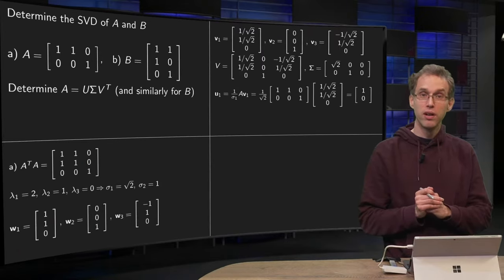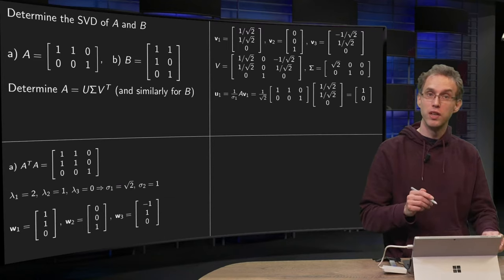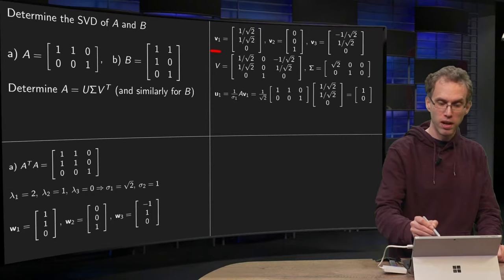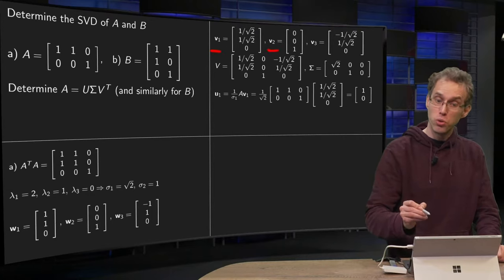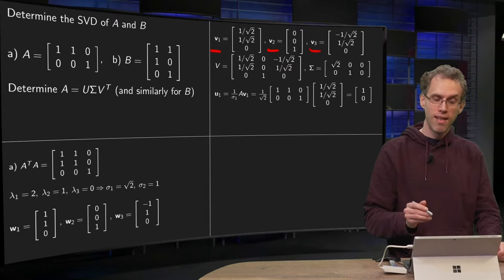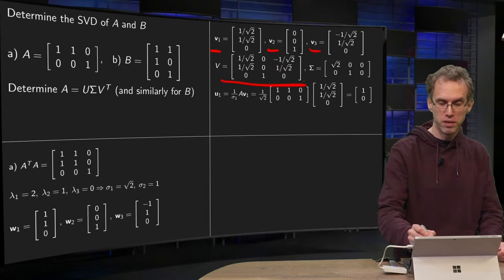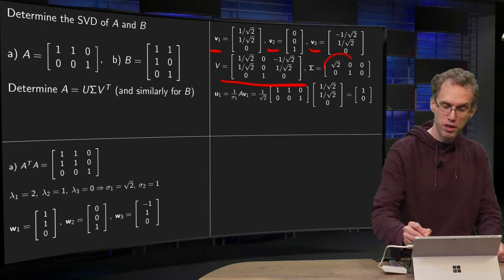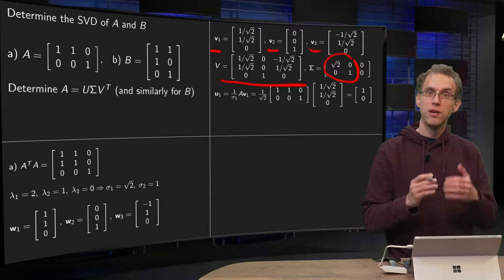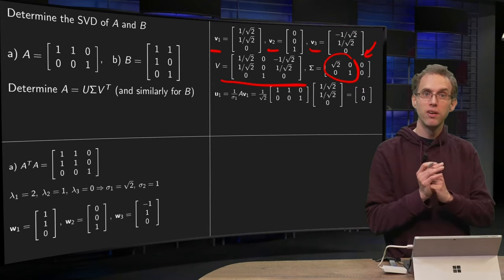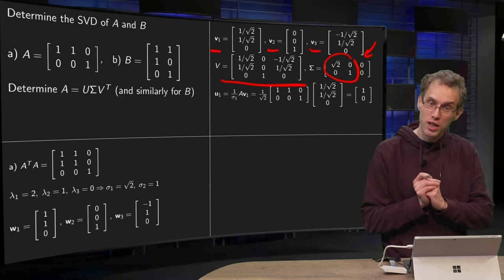Then we can compute our matrix V. First we normalize our eigenvectors. So V1 has to be normalized, V2 was already normalized, and V3 has to be normalized, and there you have your V. Then we can form the diagonal block of our sigma, put the singular values. We need to get a 2 by 3 matrix, so you have to add a column of zeros. So there you have already your sigma.